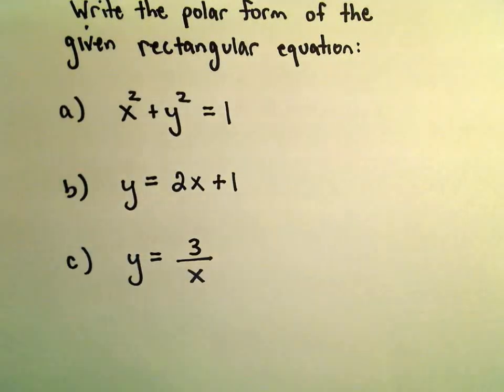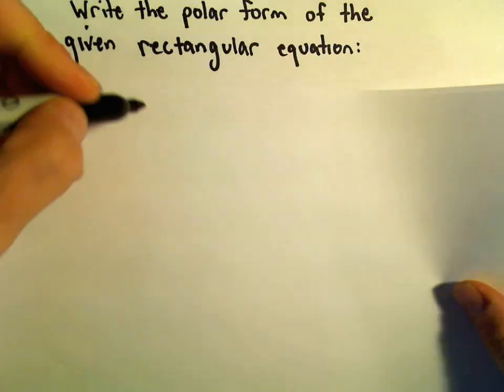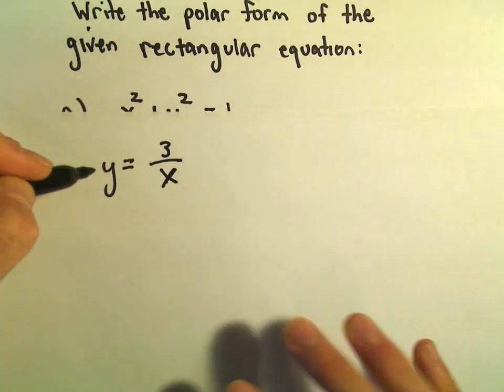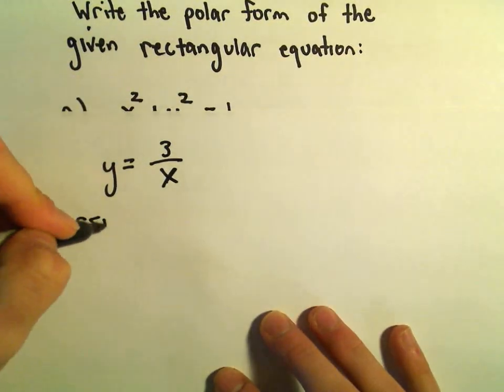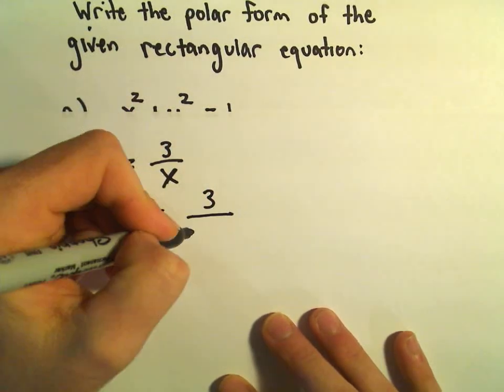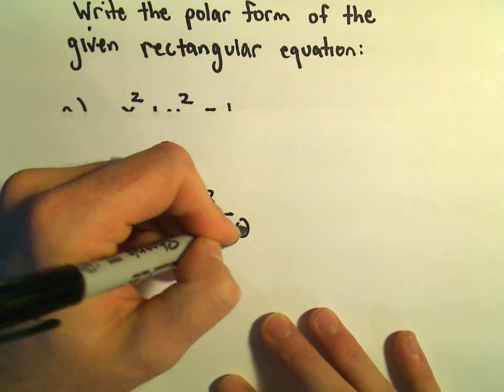Alright, so I think we've got one more here. So y equals 3 over x. Okay, so y equals 3 over x. Not bad. Okay, so again, y is going to be just r sine theta.